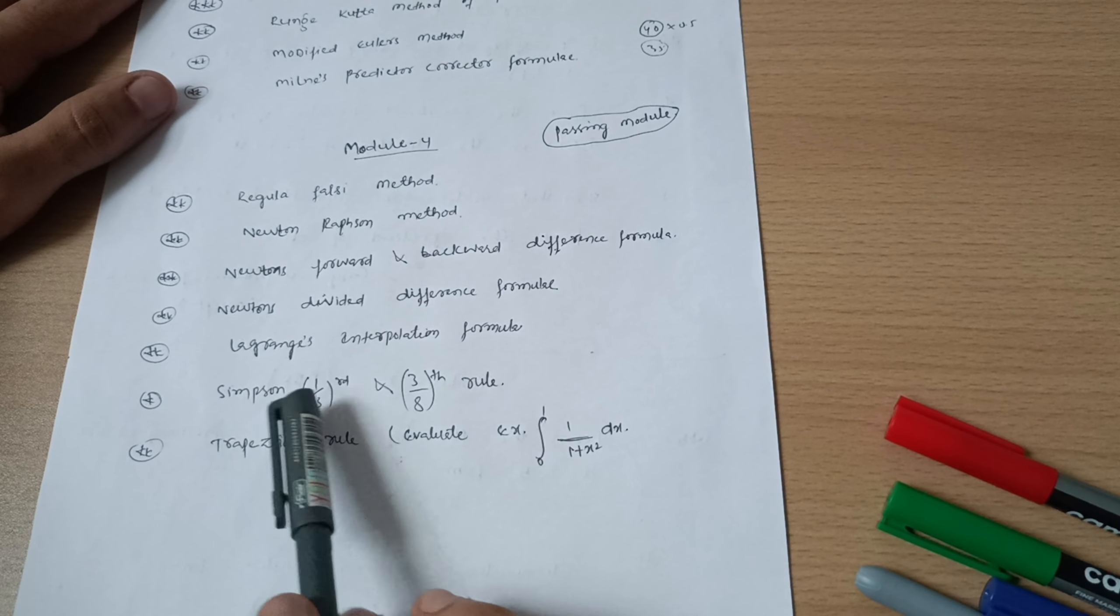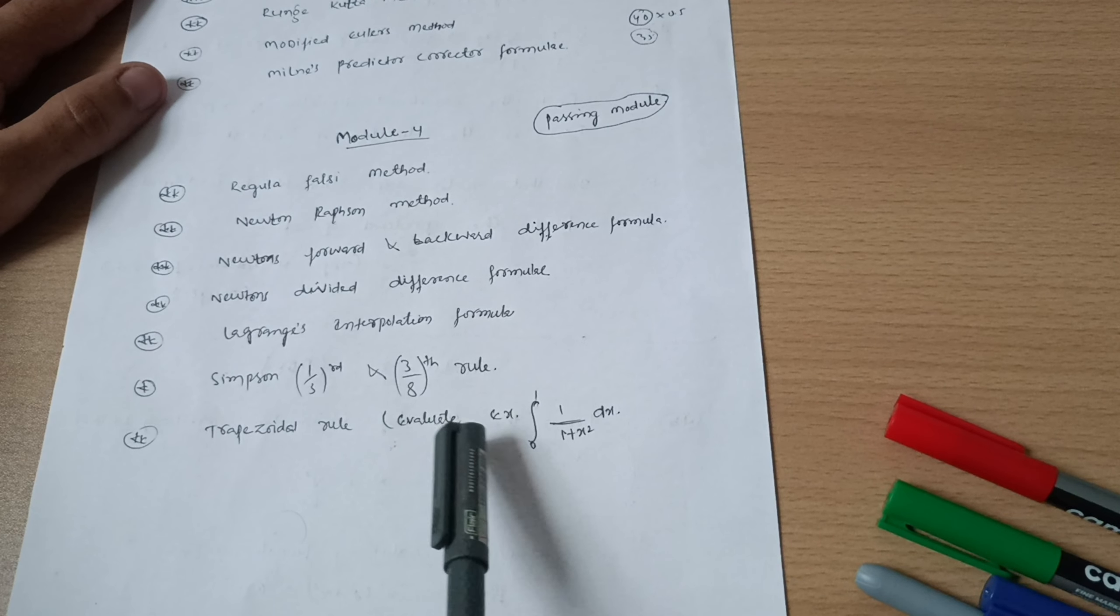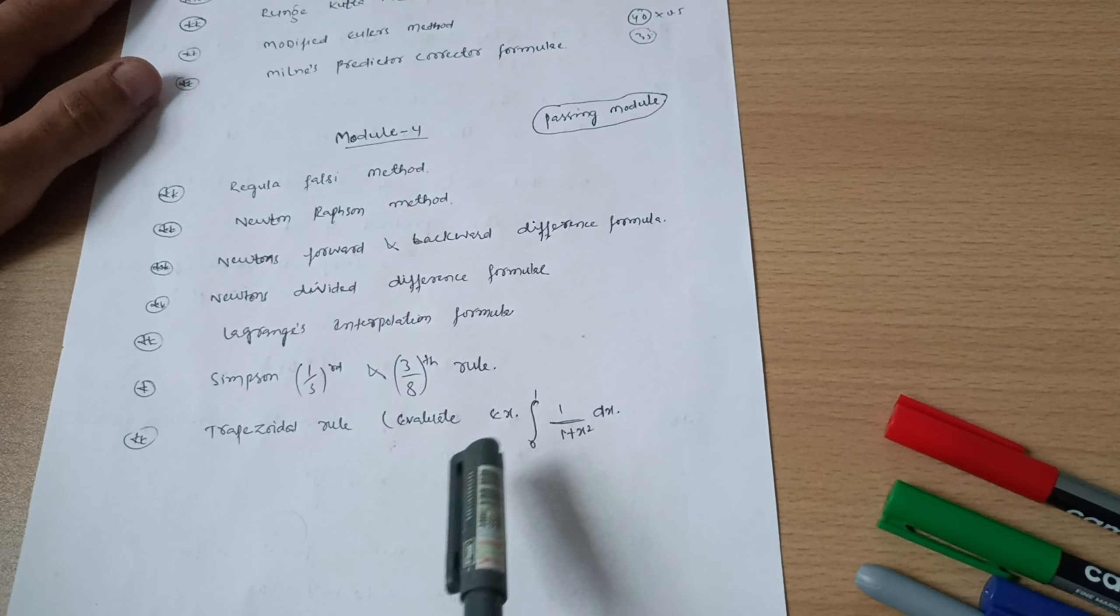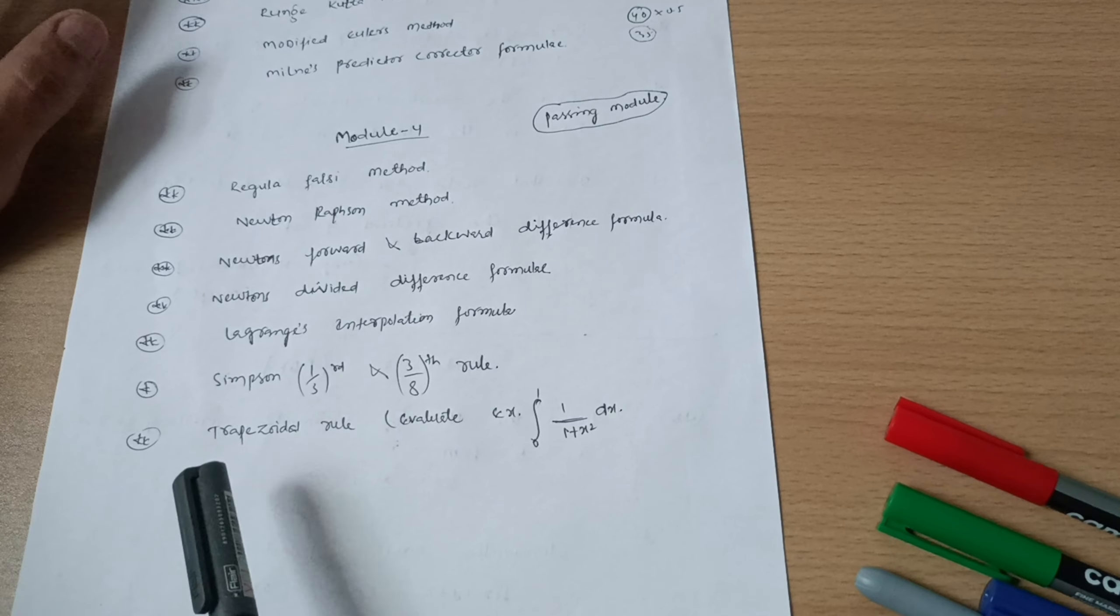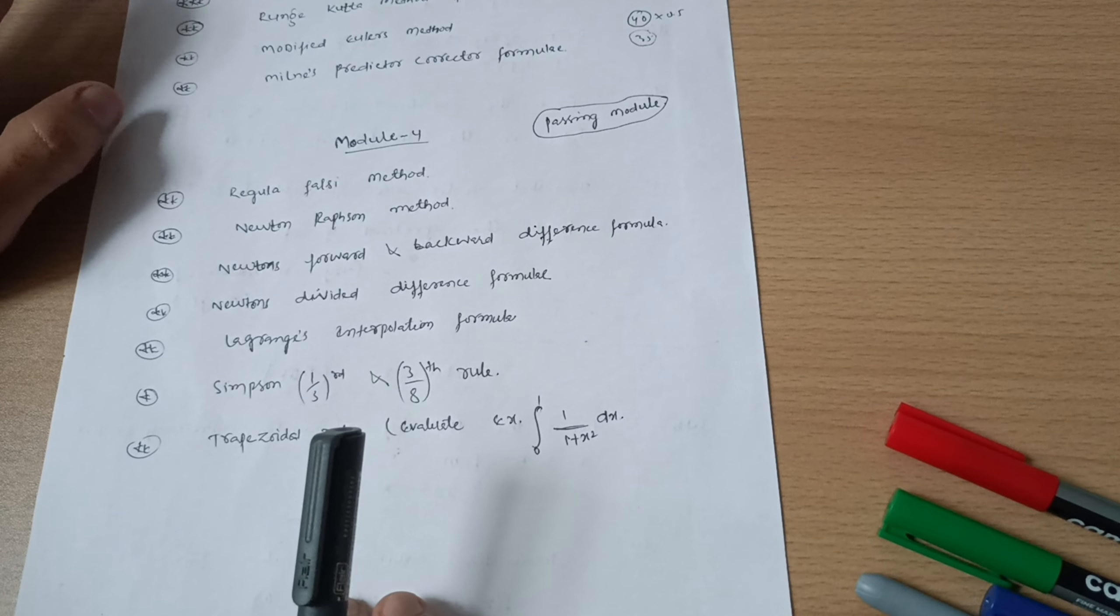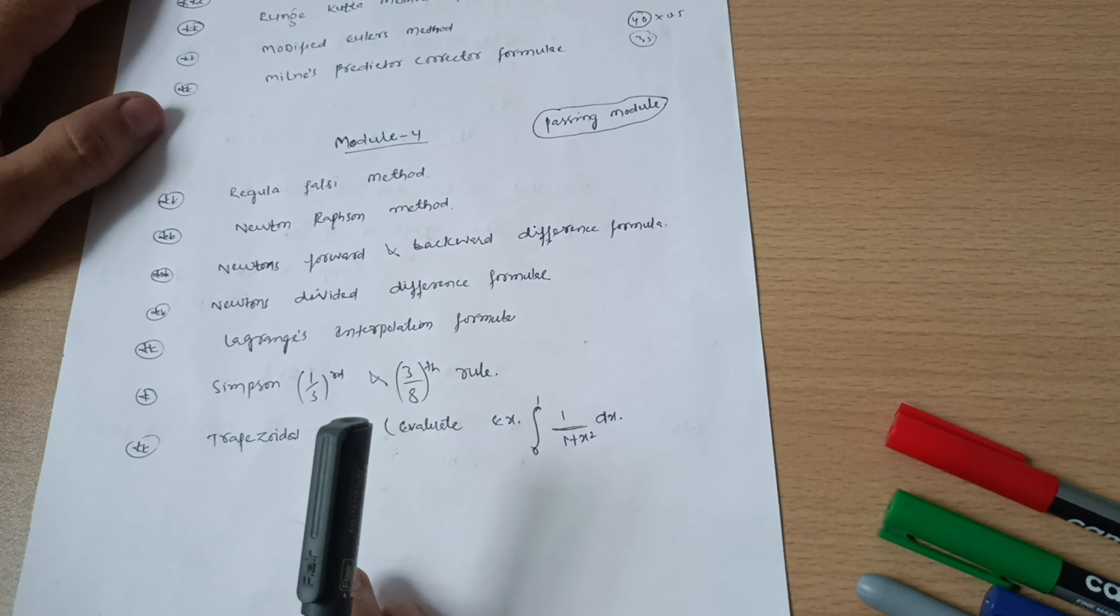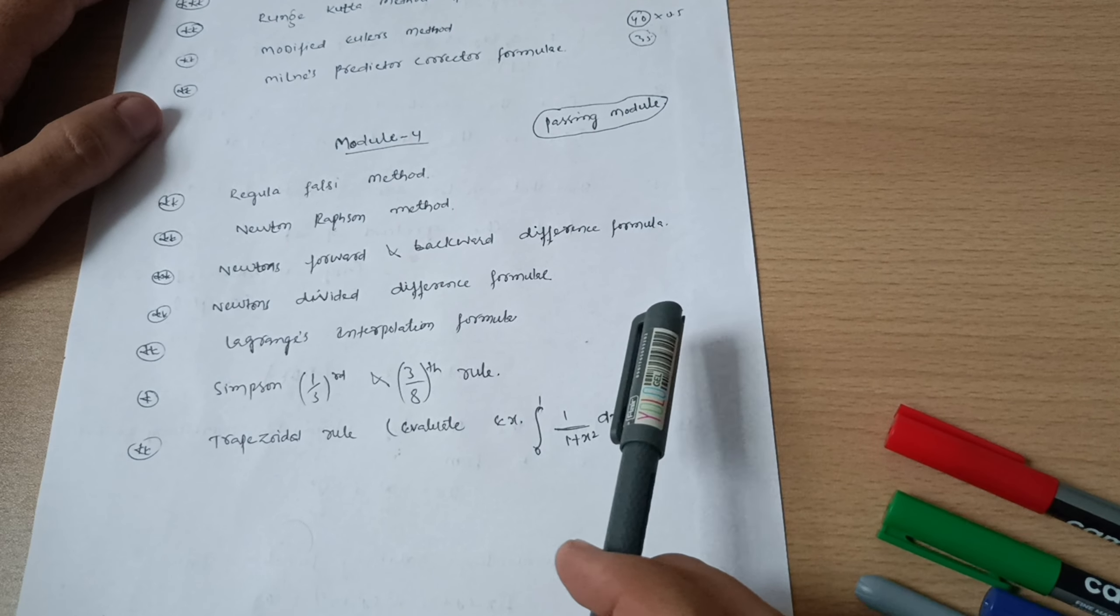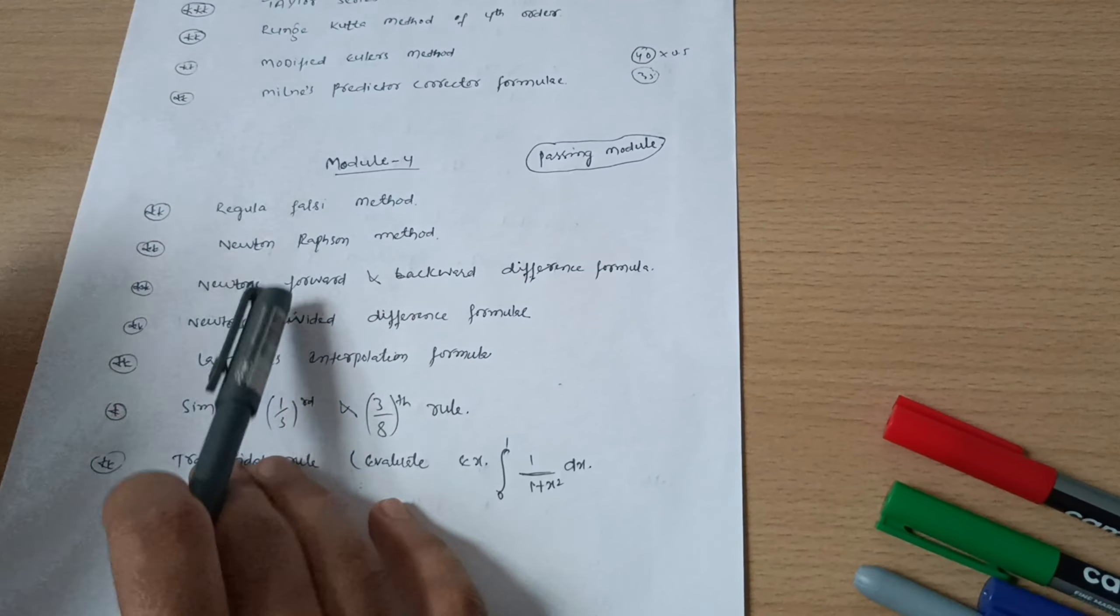Simpson's one-third and three-by-eight rule, and trapezoidal rule are in the R part. Questions will be like: evaluate integral of 0 to 1, one by one plus x dx. You have to apply the trapezoidal rule. Make sure you complete Module 5 and Module 4 fully so you can get 40 marks. If not 40, at least get 35 marks. When you multiply 35 by 0.5, you get 17.5, which is not the safer side, so you have to go through another module.